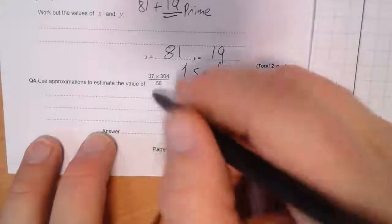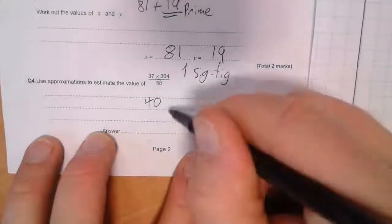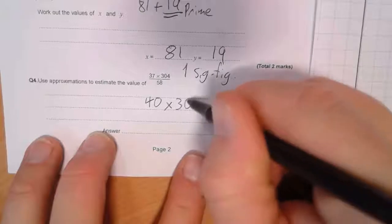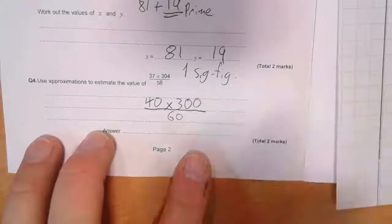So 37 to one significant figure is 40. 304 to one significant figure is 300. And 58 to one significant figure is 60.